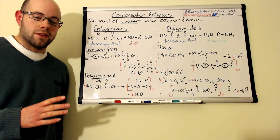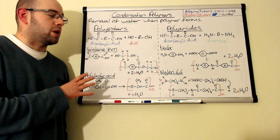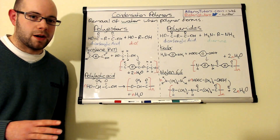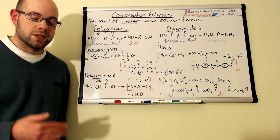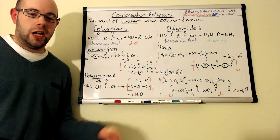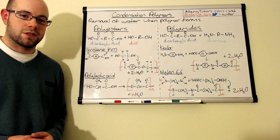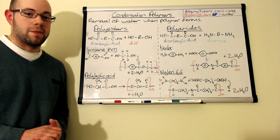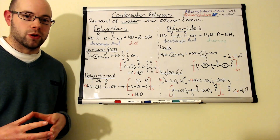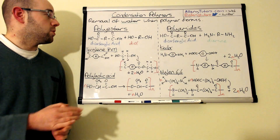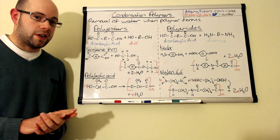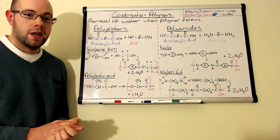Condensation polymers form three different products: polyesters, polyamides, and polypeptides. Polypeptides are where you take amino acids and form proteins as the polymer. If you want to look at polypeptide synthesis, click the link below for the video on making proteins. We're going to focus primarily on polyesters and polyamides. Condensation means the removal of water when forming our polymer, so all these reactions will have water as a product alongside your polymer.